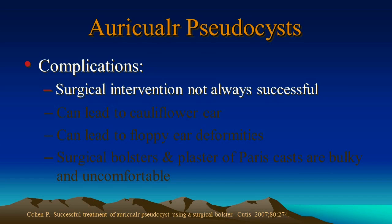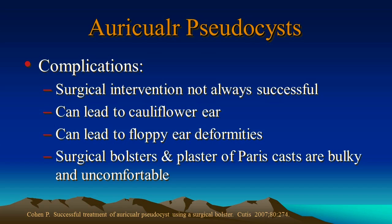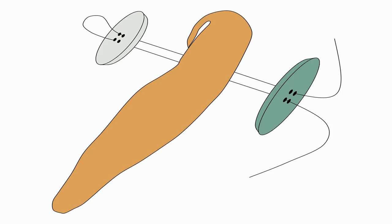Complications. While surgical intervention doesn't always work, and it can lead to a cauliflower ear, it can lead to floppy ear deformities, and surgical bolsters as well as plaster of Paris casts are bulky and uncomfortable. In thinking about how to approach this, we thought using buttons and suturing directly through the cartilage of the ear providing even compression from front to back might be useful.